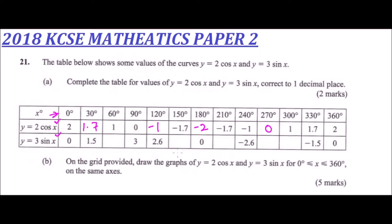For the function y = 3sin(x): when x = 60, 3sin(60) gives 2.6 — remember it is one decimal place. For x = 150, 3sin(150) gives 1.5. For x = 210, 3sin(210) gives minus 1.5. For x = 270, 3sin(270) gives minus 3. For x = 300, 3sin(300) gives minus 2.6. Filling those values earns you two marks.